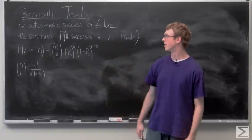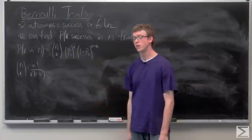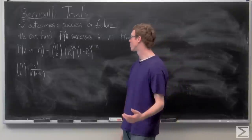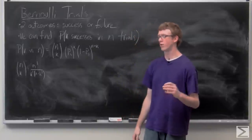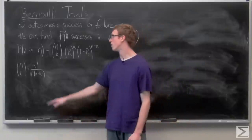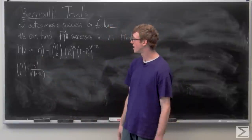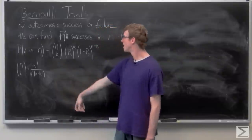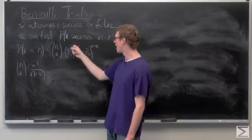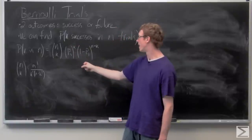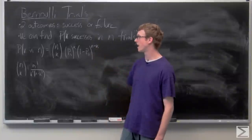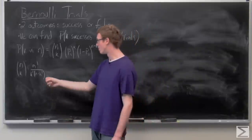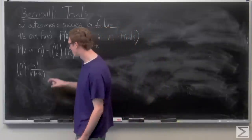And using the binomial probability distribution, we can find the probability of getting k successes in n trials when all we have is a success or a failure. So the way to do that is, the probability of getting k successes in n trials is n choose k times the probability of success to the k times one minus the probability of success to the n minus k. And n choose k is just n factorial over k factorial times n minus k factorial.